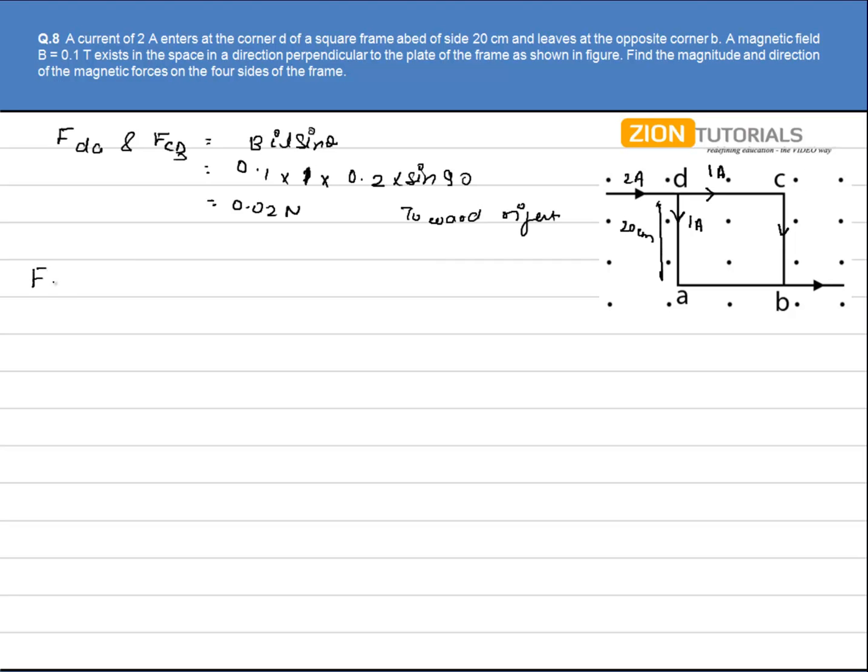Similarly, the force on CD and force on AB will be the same, that will be calculated by the same formula. Substitute the values and the magnitude again comes out to be the same, that is 0.02 N, but this time direction is upward.